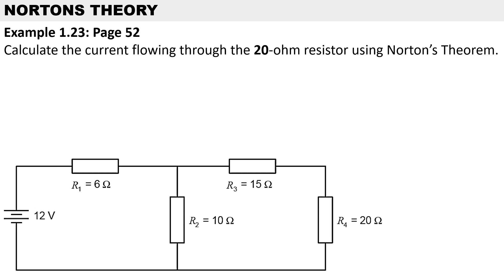This calculation comes out of our textbook — it's an example for Norton's theorem. To remind you, Norton's theorem states that the voltage sources and resistors in an electric circuit can be replaced with a single current source in parallel with a resistor. In this example, we need to calculate the current flow through the 20-ohm resistor using Norton's theorem.